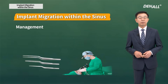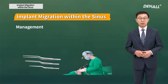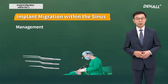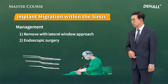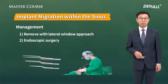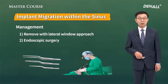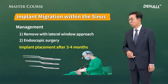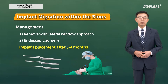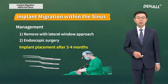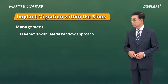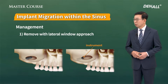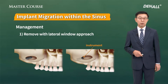If the implant migrates into the sinus, how should we address it? First of all, you need to remove it as soon as possible. To do so, you can use lateral window approach, or rarely endoscopic surgery may be necessary. The most easy and simple way is to do lateral window approach to remove the implant. After the implant is removed, you need to place a new implant after three or four months so that the sinus membrane becomes fully healed. When making the lateral window, you need to do it in the same way as the standard sinus lateral window approach.